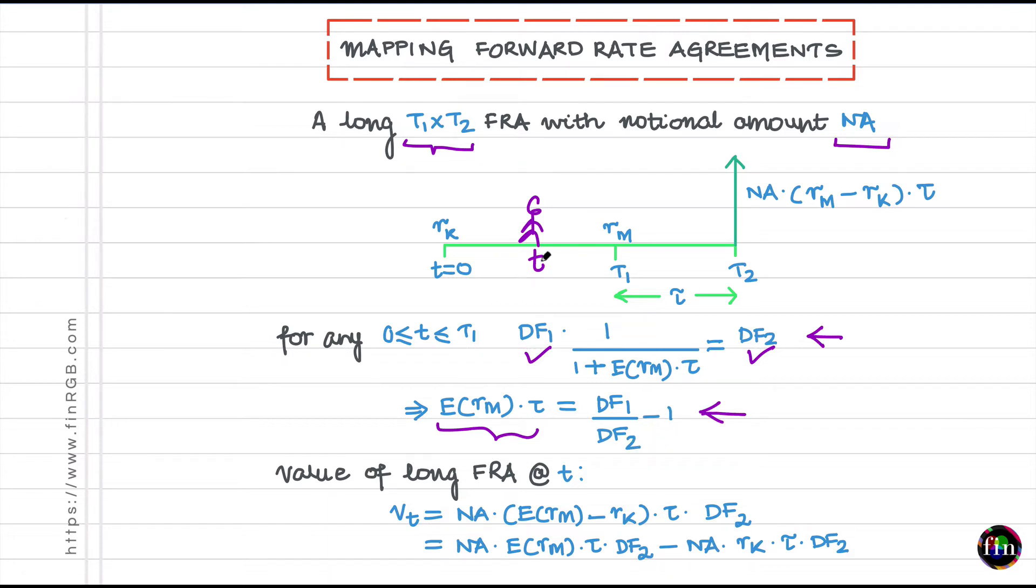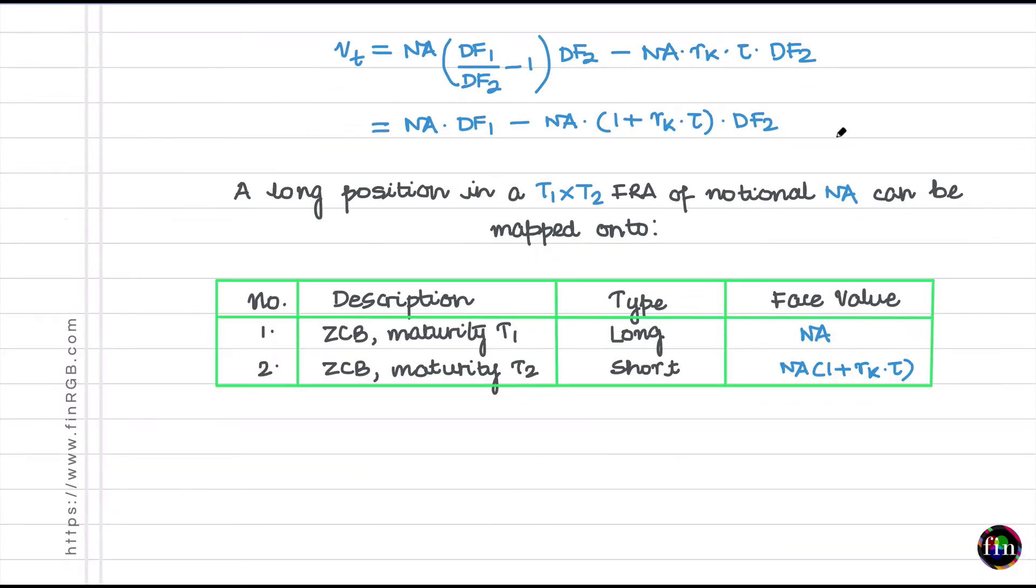So therefore to calculate the fair value of my forward I just take what is promised to me, replace this RM which is not yet known to me by its best guess, an amount which comes from here, and then discount this cash flow which happens at T2 to today. That means I need to multiply by DF2. I have taken this formula, replaced the RM by expected value of RM, and I have multiplied this payoff by DF2. So expected value of RM times tau I can replace it by DF1 by DF2 minus 1, and what do you get in the end? You get a formula which looks something like this. The value of my FRA is notional times DF1 minus notional times 1 plus RK tau times DF2.